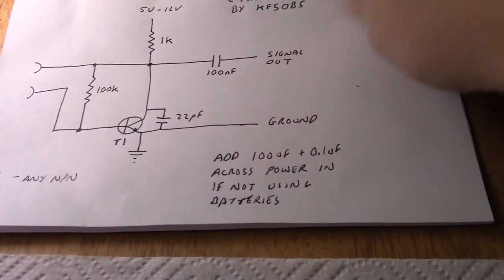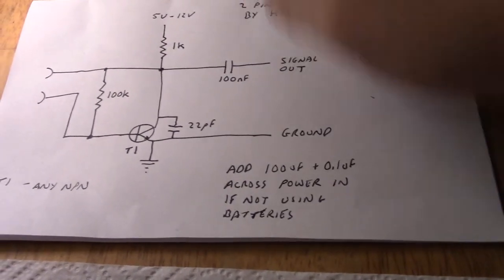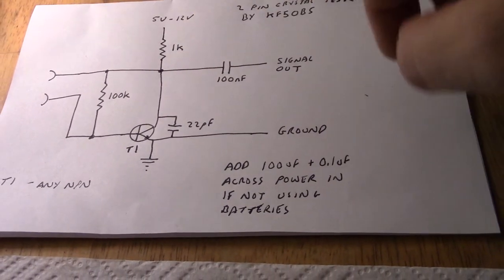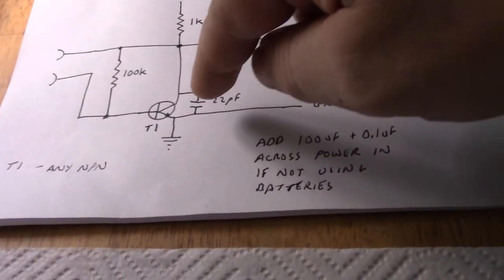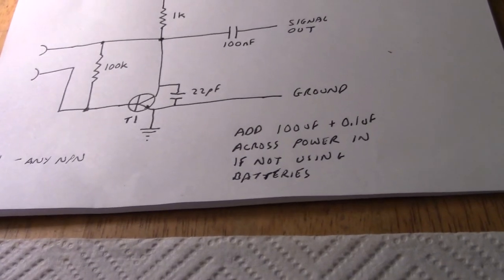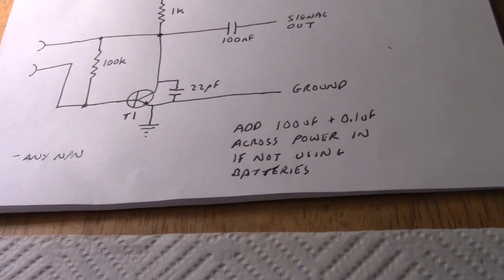These are just the components needed: 0.1 microfarad capacitor, 100k, 1k resistor. On my circuit I've actually got a variable capacitor just in case any of them didn't tune up, but I haven't found that to be a problem.